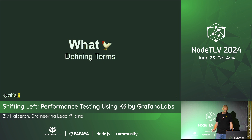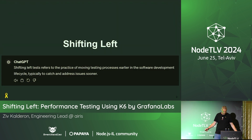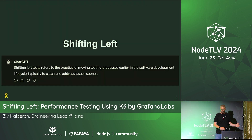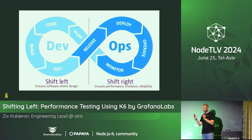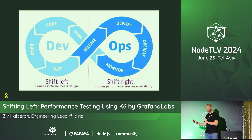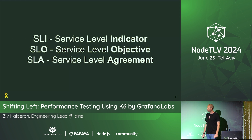Let's make sure we're aligned on the defining terms. Shifting left — I asked ChatGPT to summarize it in one sentence and it says: basically the practice of moving the testing process as early as possible in the development lifecycle. The left side happens before production, the right side happens after production. I'm trying to push our performance tests to before we deploy to production.